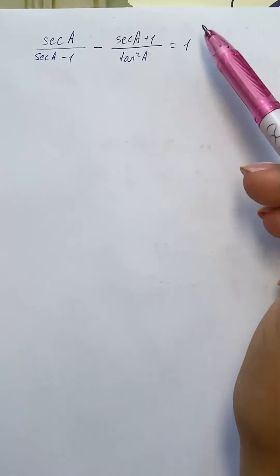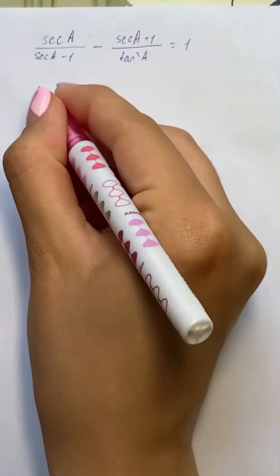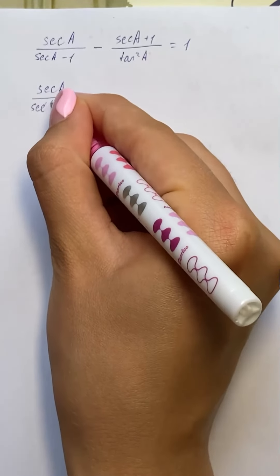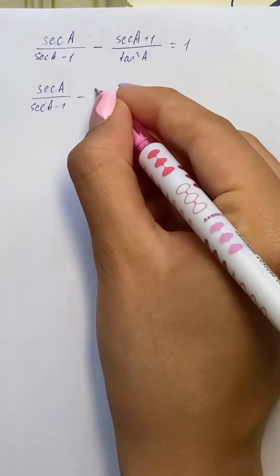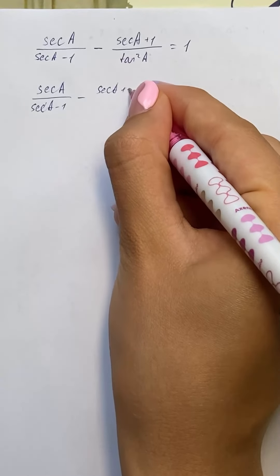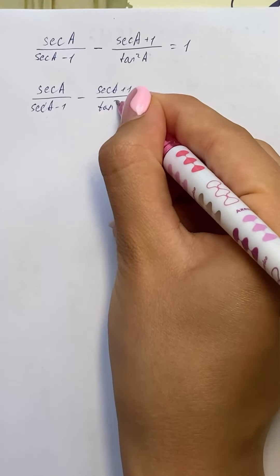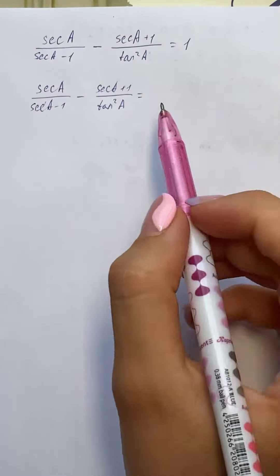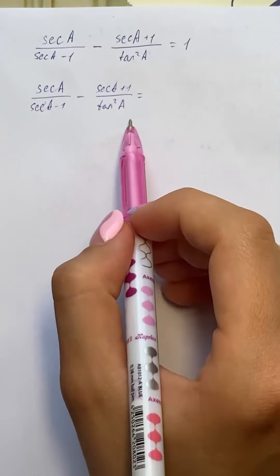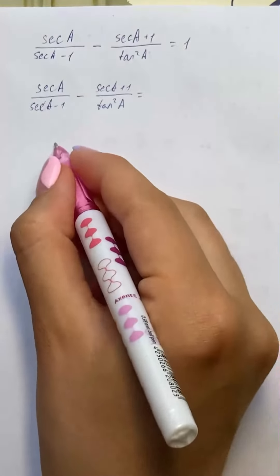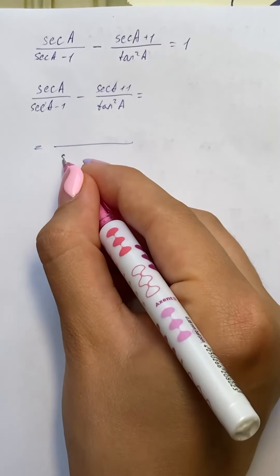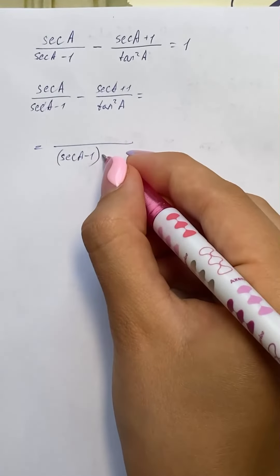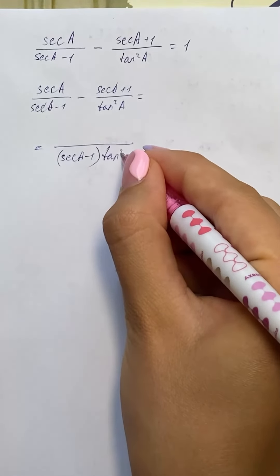We're going to solve the left hand side: secant of a over secant of a minus one, minus secant of a plus one over tangent squared of a. First, we're going to find the common denominator, which is secant of a minus one times tangent squared of a.